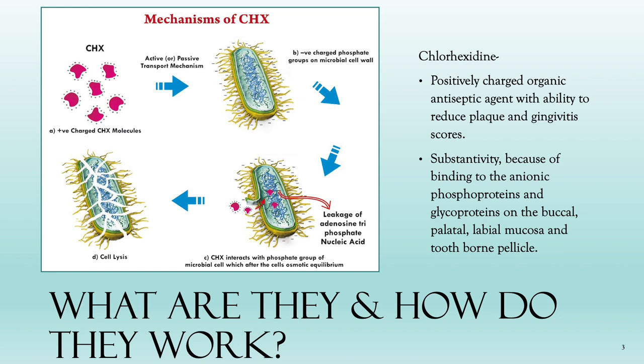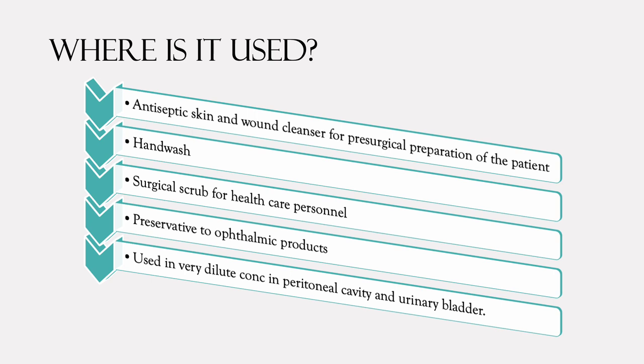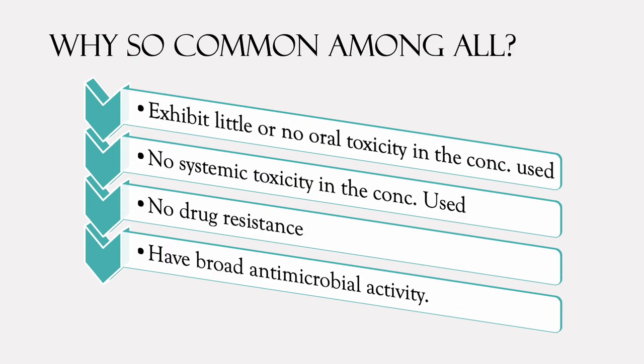Chlorhexidine is not just used in the mouth — it has applications elsewhere as well. It's used as an antiseptic skin and wound cleanser for pre-surgical patient preparation, in hand washes, surgical scrubs, as a preservative, in ophthalmic products, and in very light, dilute concentrations in the peritoneal cavity and urinary bladder. So it has many other usages.